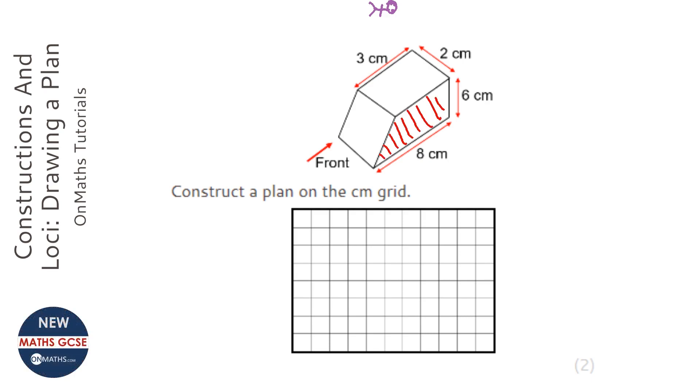This side at all, because that's perpendicular to where we're looking. But we can see this side here and we can see this side here. We can also see a kind of join between them, so we need to show that on our diagram.